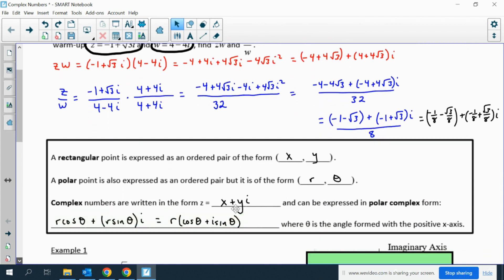You could also do the same thing in polar form. Remember that x is r cosine theta and y is r sine theta. So we could write the complex number in polar form: r parentheses cosine theta plus i sine theta.